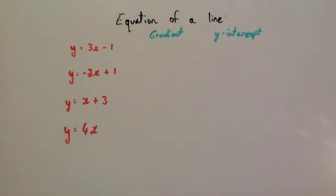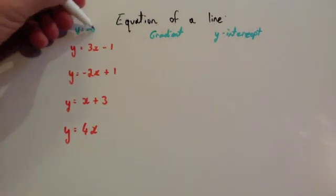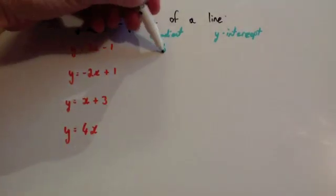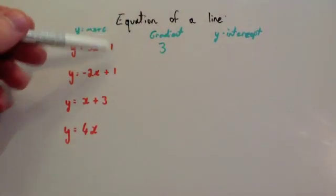Here's some equations, and we're going to find the gradient and y-intercept for each of them. So if you had y equals 3x minus 1, well, because it's y equals mx plus c and m is the gradient, the gradient for this line would be 3. The y-intercept would be minus 1.